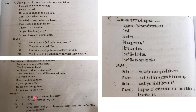Example showing communicative functions of willingness: S1 says, I am going to attend the party. S2: It's not worth going there. S1: Why? S2: You can't enjoy it because there are all unfamiliar people invited.